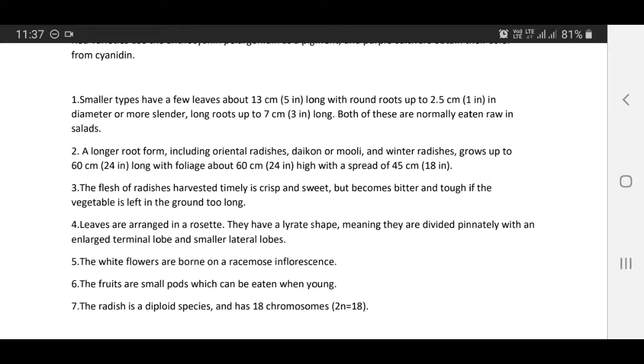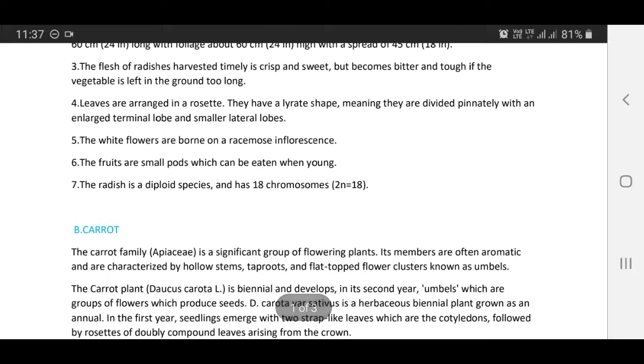The fruits are small pods which can be eaten when young as vegetables. The radish is a diploid species and has 18 chromosomes (2n=18).